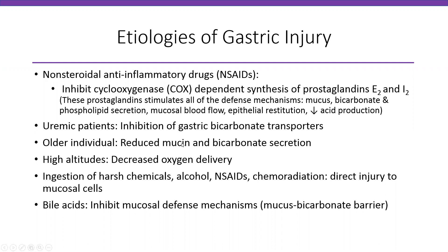Another etiology of gastric injury is high altitude — decreased oxygen delivery can damage the gastric mucosa. Ingestion of harsh chemicals, alcohol, NSAIDs, and chemoradiation can also cause direct injury to the mucosa. Bile acid inhibits the mucosal defense mechanism — the mucus-bicarbonate barrier — so when you have reflux of duodenal contents into the stomach, you will have injury.